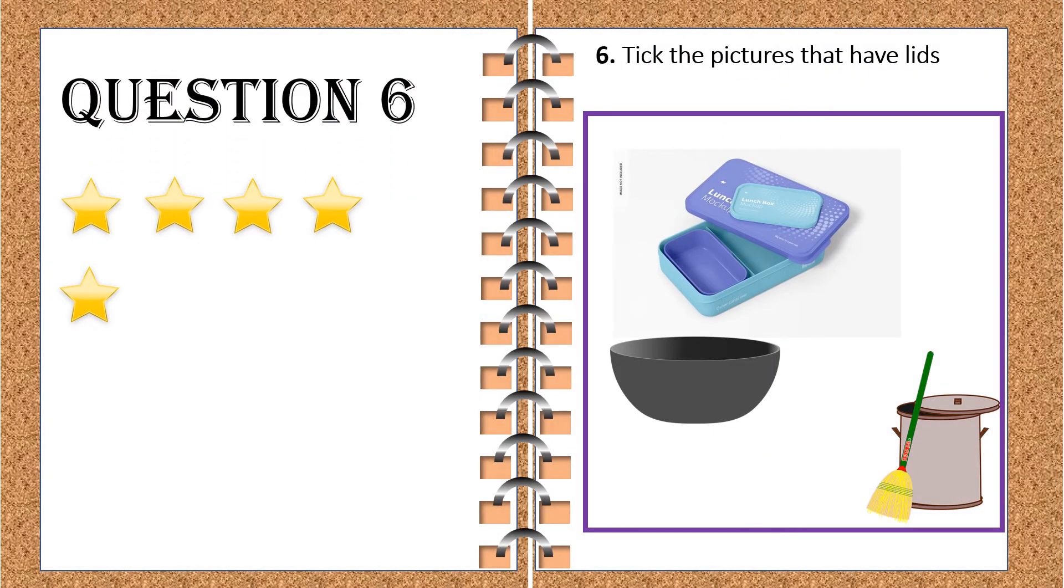And the next question number six. This says, tick the pictures that have lids. Wow! I know this. Did you give the correct answers? Let's check. Yes. The stiffen box has a lid, and a dustbin has also lid, and a bowl. This bowl doesn't have any lid. So these two are the correct answers. Time to give a star.